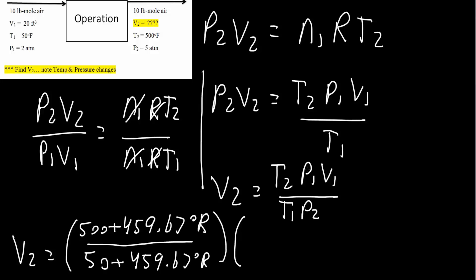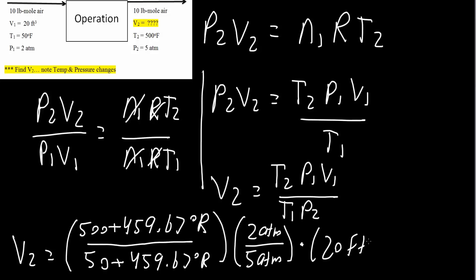Next, P1 divided by P2: P1 is 2 atm and P2 is 5 atm. Finally, we multiply by V1, which is 20 feet cubed. Rankine cancels with Rankine, atmosphere cancels with atmosphere, and all we have left is feet cubed — so V2 will be in units of feet cubed.